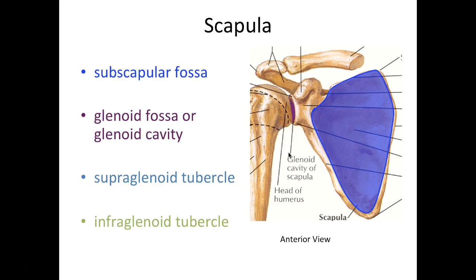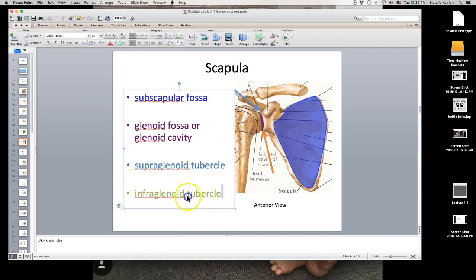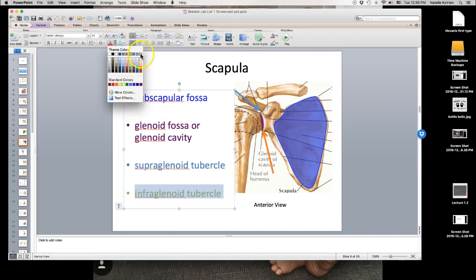The next structure is called the glenoid fossa or cavity — it's a shallow depression at this end where we're going to have an articulation or form a joint with the head of the humerus. On this glenoid fossa we also have two tubercles — remember tubercle means sharp bump. The supraglenoid tubercle: supra means it's above the glenoid. And the infraglenoid tubercle is a bump below the glenoid fossa.